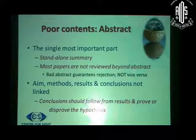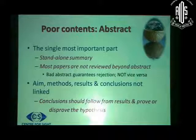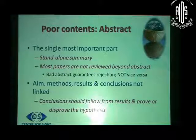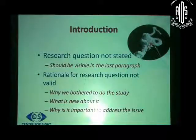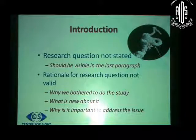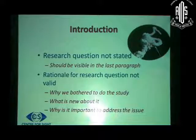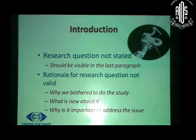What can be the problems? The aims, methods, results, and conclusions are not linked. The conclusions typically should follow from results and prove what is true to the hypothesis. There can also be launching problems — the research question itself is not stated well enough. It should be clearly visible in the last paragraph of the introduction. Or the rationale of results is either not valid or not validated. Why are we bothered to do the study? What is new about it? And why is it important for readers to know about this new thing?